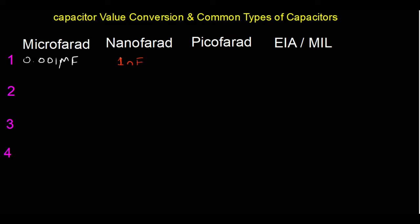We multiplied microfarad by 1000 to get nanofarad. Now, how do we write it in picofarad? If you multiply nanofarad by 1000, you get picofarad. So 1 nanofarad equals 1000 picofarad.